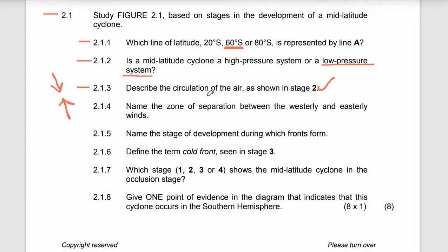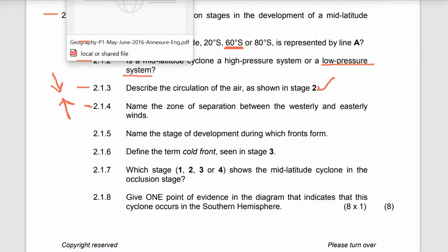In the southern hemisphere they move in a clockwise direction, but in the northern hemisphere the air masses or the circulation moves in an anticlockwise direction. Moving to 2.1.4: name the zone of separation between the westerly and easterly winds.